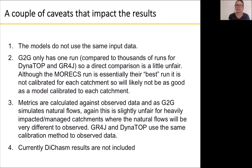The third point is that metrics are calculated against observed data. For dynamic top model and GR4J we calibrate our model simulations to this observed data to get a reasonable fit to the flow observed at the gauge. However, Grid-to-Grid simulates natural flows, so the model results will look a little different for heavily impacted or managed catchments where the natural flows will be very different to the observed.